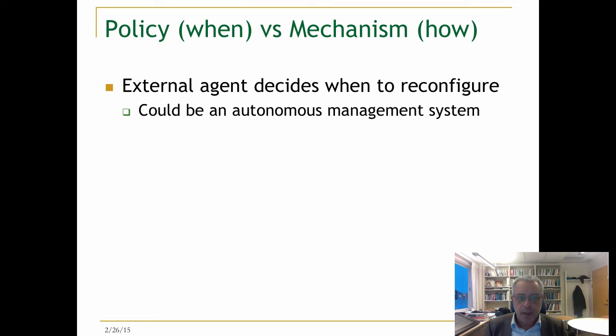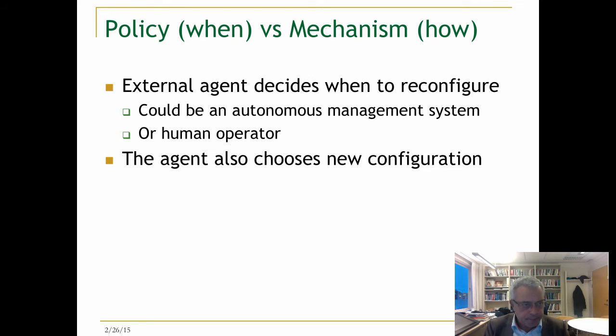The external agent could be an autonomous management system which has certain policies. For example, if you have a replicated state machine of five nodes, it will tell you whenever one node is suspected, then we start the replacement of that node or the reconfiguration of the system, or it could be a human operator that monitors the system.